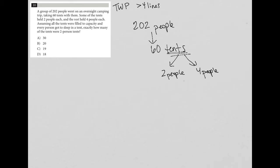Assuming all the tents were filled to capacity, so every tent that held two people had two people, every tent that held four people had four people. And altogether, of course, we got up to the 202 people in these 60 total tents. So assuming all the tents were filled to capacity and every person got to sleep in a tent, exactly how many of the tents were two-person tents?